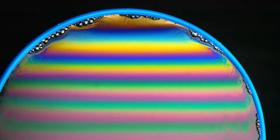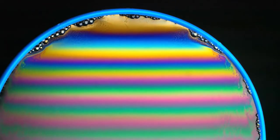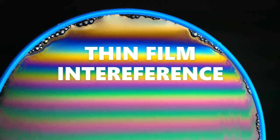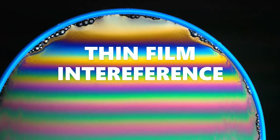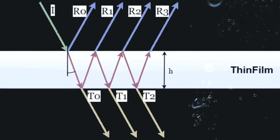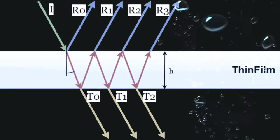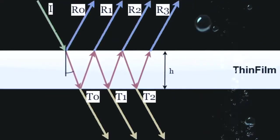The rainbow colors in bubbles are a result of a phenomenon known as thin film interference. Basically, the walls of the bubble are so thin that when a ray of light enters the bubble, some part of it goes through while some part of it reflects back. The ray of light keeps splitting, some waves reflecting back and some continuing on and on.